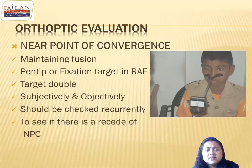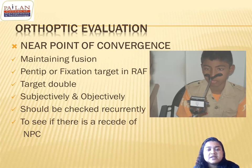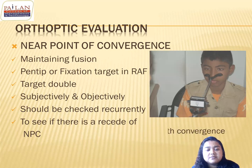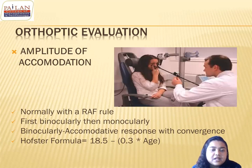For the near point of convergence test, you need to repeat it three to four times to see whether the patient is responding well. If the convergence is receding — for example, first time you get 7 cm NPC, second time 8 cm, third time 8 cm, then 9 cm — if the NPC recedes like this, that may be a sign of convergence insufficiency.